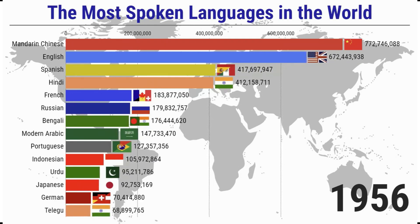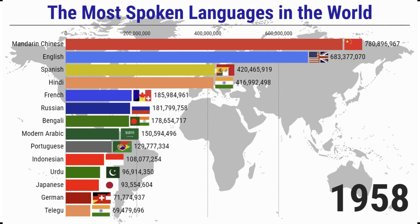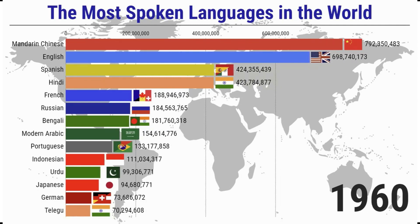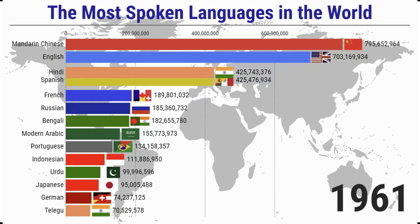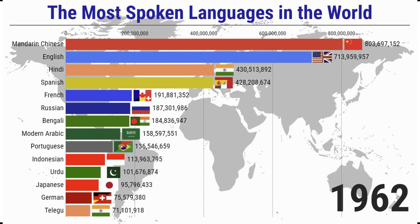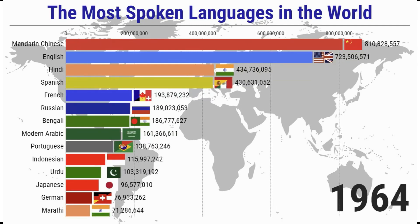Multinational companies operate globally and have basic language requirements when recruiting employees. According to LinkedIn, more than 90 percent of global multinational corporations require their employees to be familiar with English, while no more than 10 percent of multinational corporations require their employees to be familiar with Chinese.